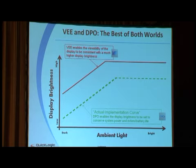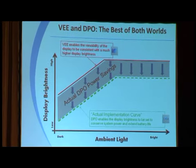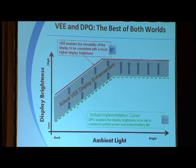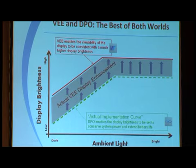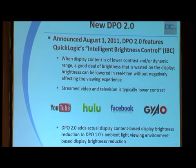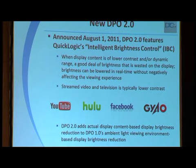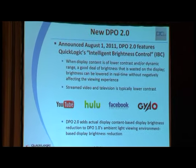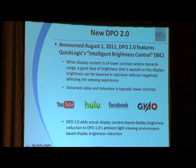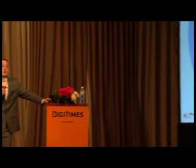It's the only technology in the world that can provide this type of benefit to the user. A new technology we announced last Monday is DPO 2.0, which features what we're calling Intelligent Brightness Control. VEE 1.0 changes display brightness based on the ambient light viewing environment. DPO 2.0 also adapts the display brightness to what the content actually is.